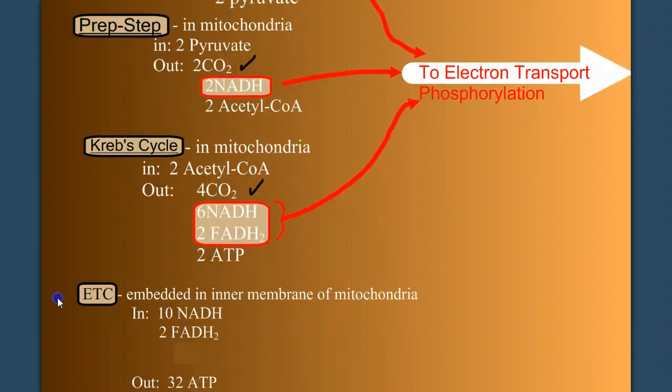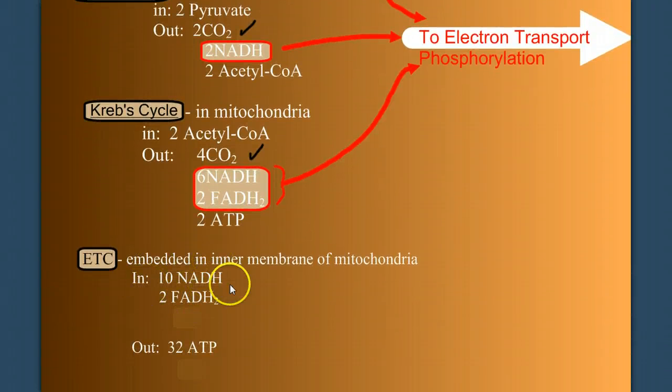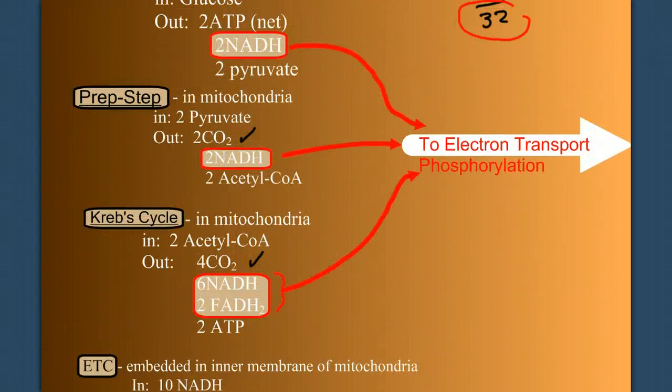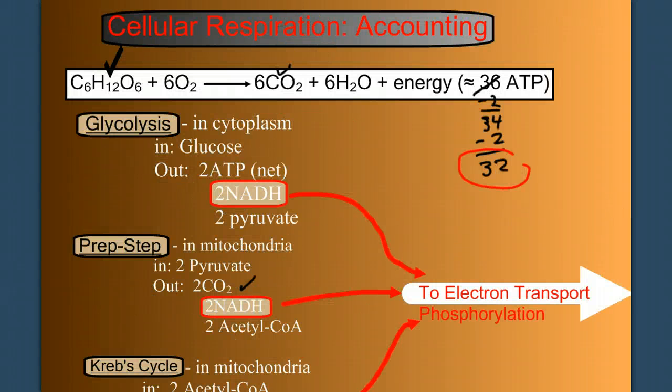After we go through the electron transport chain and we've dropped off our high-energy electrons from the 10 NADH and the 2 FADH2, we have an output of approximately 32 ATP. So, we're done making ATP, but we have a problem. We've yet to make water, and we've yet to use oxygen.